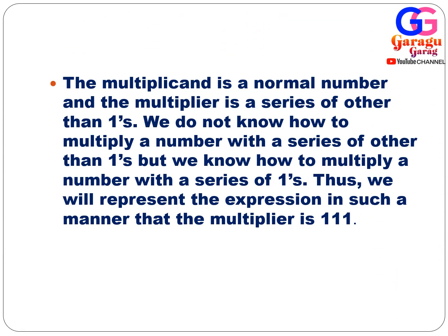When the multiplicand is a normal number and the multiplier is a series of digits other than ones, we represent the multiplier in a form where it becomes a digit times 111. This way we can apply the series-of-ones technique that we already know.